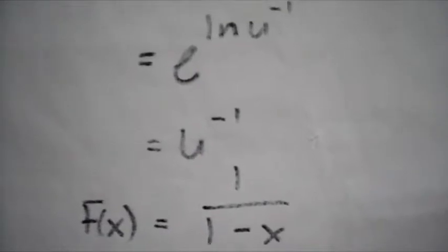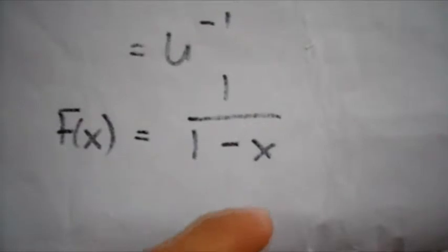Substituting it with the value of u we get f of x which is equal to 1 over 1 minus x.